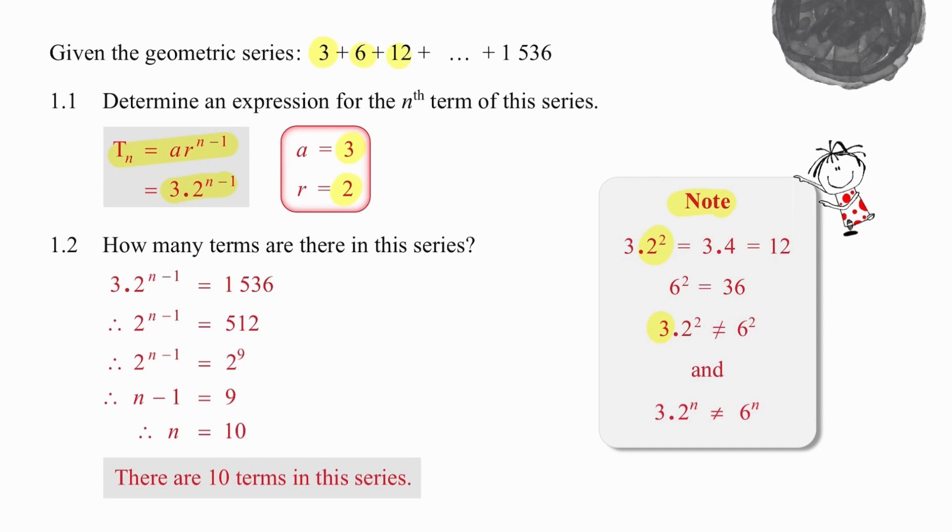Alright, moving on to 1.2, how many terms are there? We know the value of the last term, and we have worked out a formula for each term. So we simply equate those two, do our basic algebra, and n will be equal to 10.